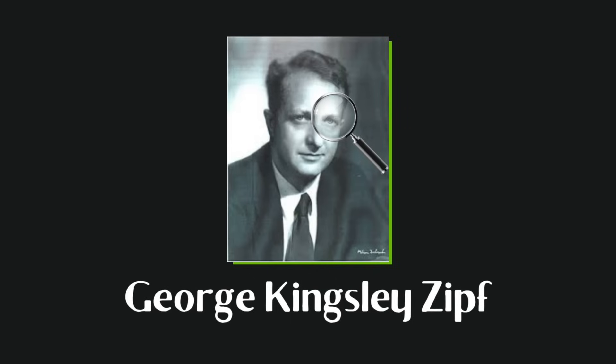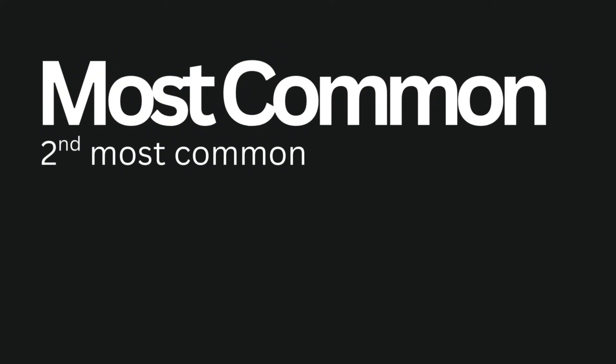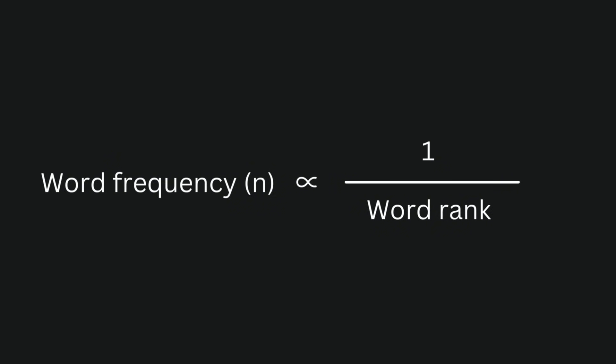He found that in any given large body of language — so a long book, for example, not something shorter like a paragraph — the most frequent word will occur approximately twice as often as the second most frequent word, which occurs twice as often as the fourth most frequent word, and so on. There's a pretty mathematical way of putting it: the nth most frequent word is proportional to 1 over n.